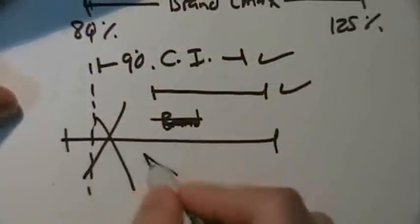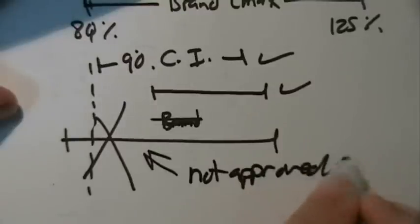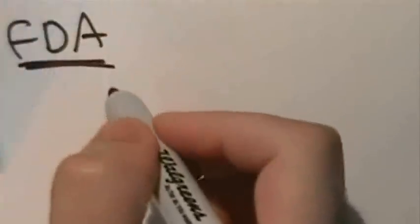If the confidence interval lies outside these ranges, the generic drug will not be approved. So since the FDA allows a little bit of room for variation in concentration between brand name drugs and generic drugs, does this mean that they are different and we shouldn't switch between them?